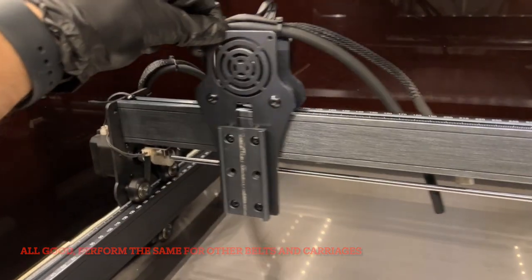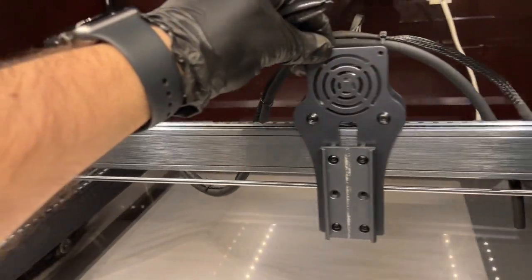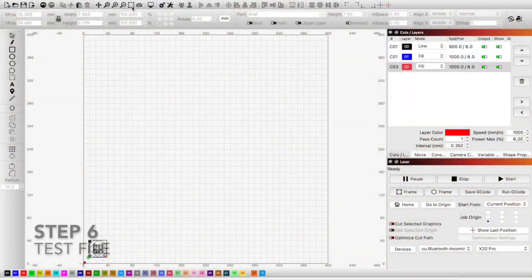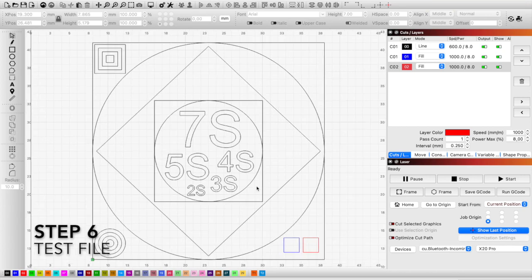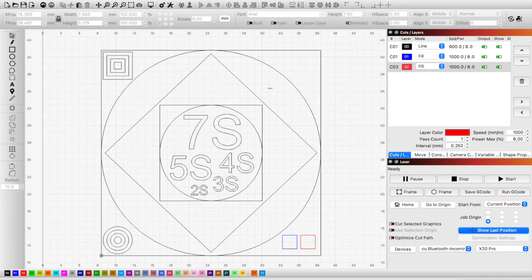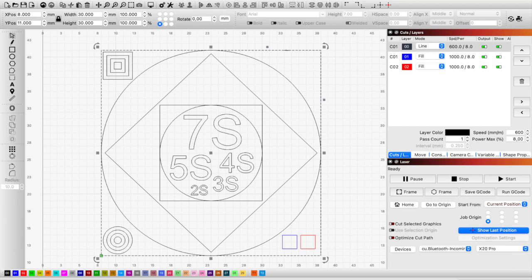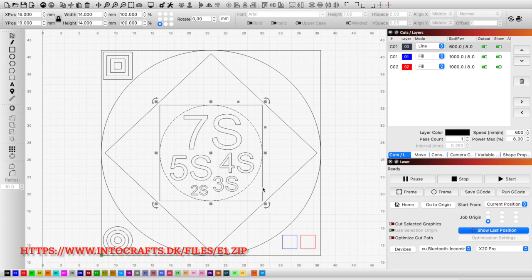Repeat the same procedure for the other belts and carriages. Try to run an example like this with different sizes of squares, circles, letters, vertical and horizontal scanning lines, or download the file from the below link.